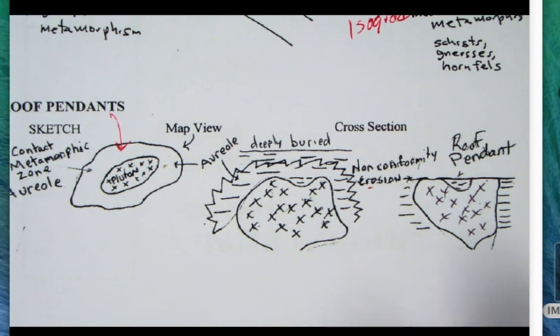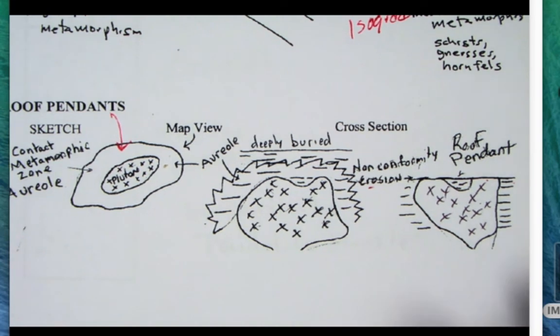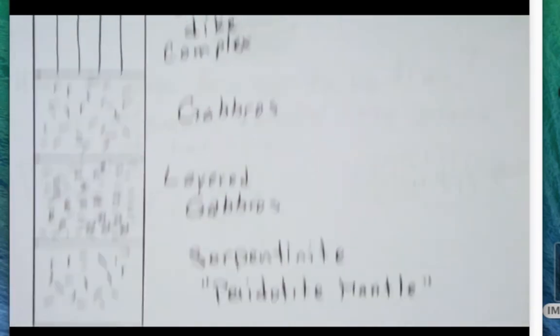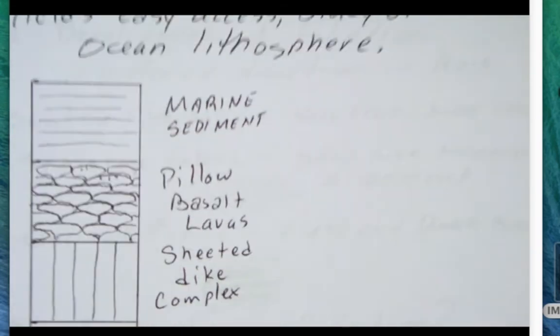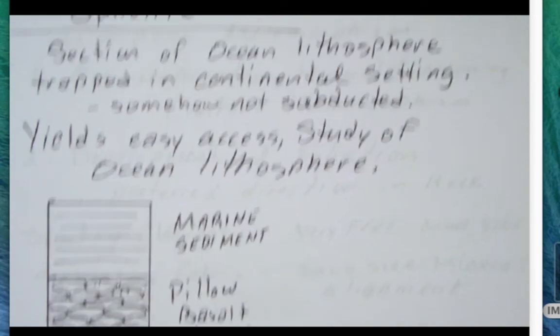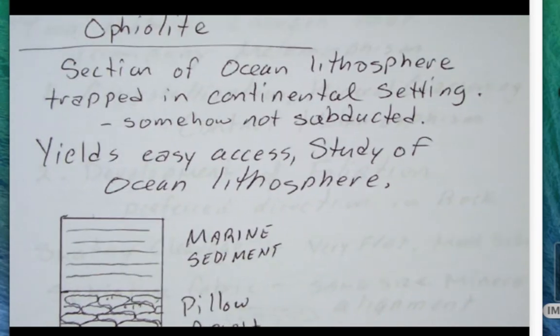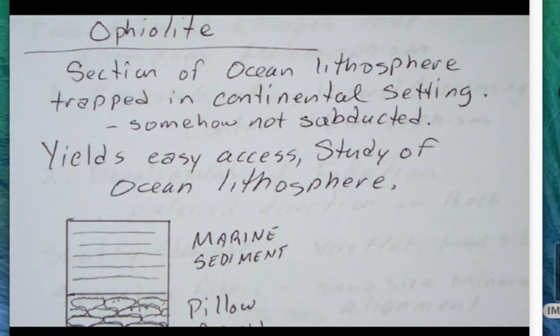Now I want to look at the ophiolite sequence. An ophiolite refers to a section of ocean lithosphere that was somehow trapped in a continental setting.